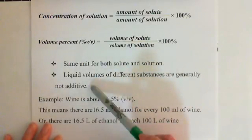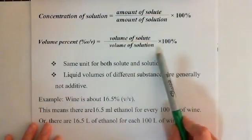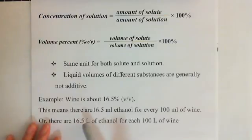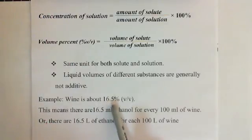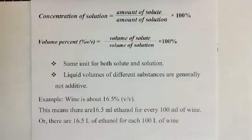That's why when we do this type of question, we need to know volume of solute and volume of solution. For example, wine is about 16.5 percent volume to volume. This means there are 16.5 milliliters of ethanol for every 100 milliliters of wine, or there are 16.5 liters of ethanol for each 100 liters of wine.